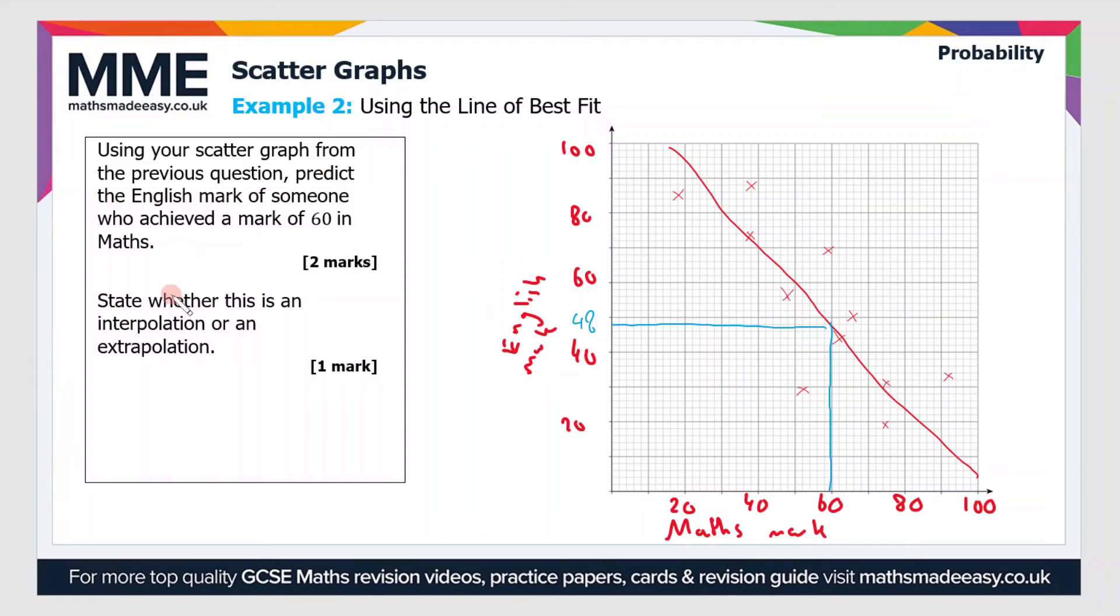So we would say that someone who achieved a mark of 60 in maths achieved a mark of 48 in English.